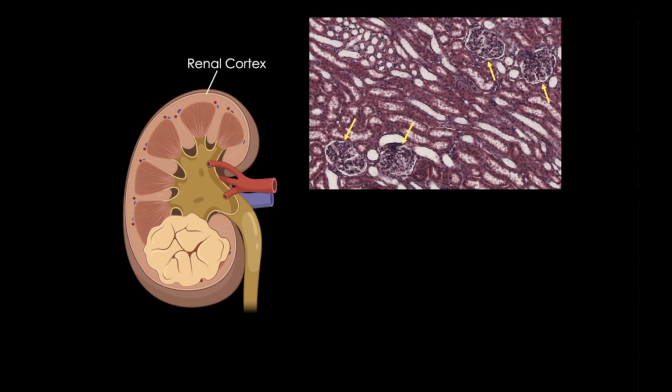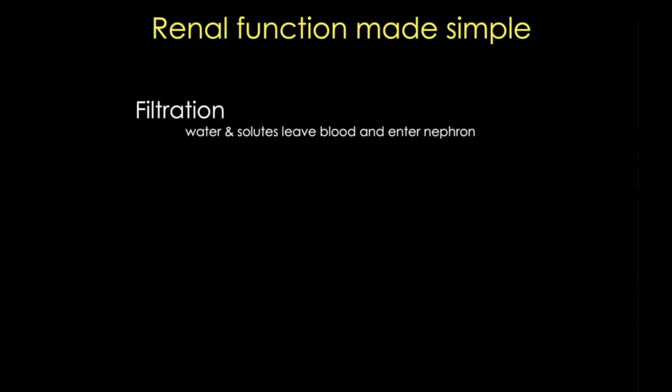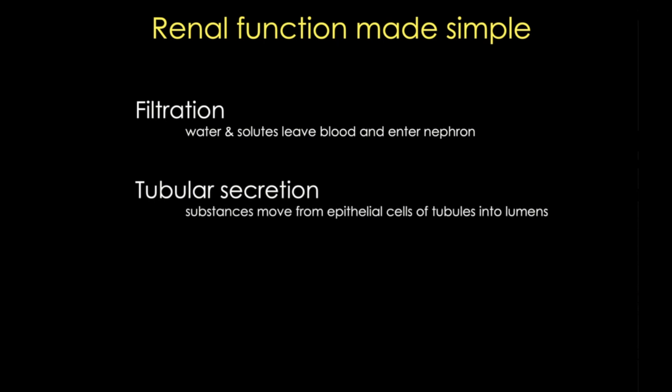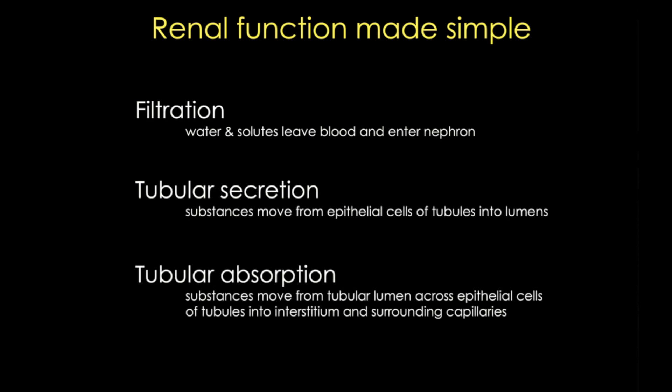First we see the renal cortex, which is formed of corpuscles and tubules, and next we have the medulla, which only has tubules. The entire tubule structure is designed to do three major things: filter the blood, move substances up from the blood through the epithelial cells of tubules into the lumen, and transport substances from the filtrate into the interstitium and eventually into the blood.